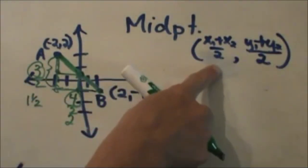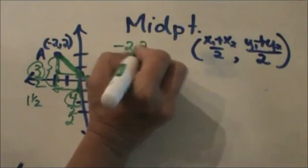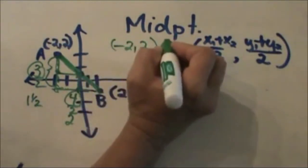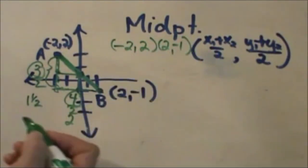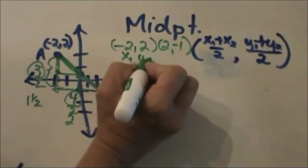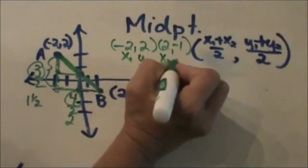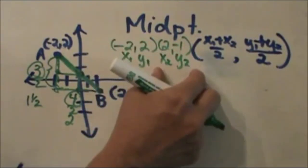Now let us look at the formula way. I have the point (-2, 2) and the point (2, -1). I am going to label these x1, y1, x2, y2. This is my first ordered pair. This is my second ordered pair.